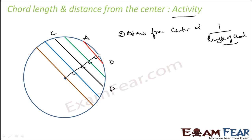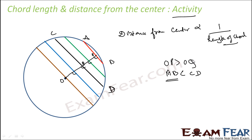Let this be point P and this Q. You will see that OP is greater than OQ, but AB is less than CD. P is a point on AB and Q is a point on CD. If AB is smaller, the distance of point O from AB is more. If CD is bigger than AB, then the distance of point O from this chord is less. They are inversely proportional — that is our activity observation.